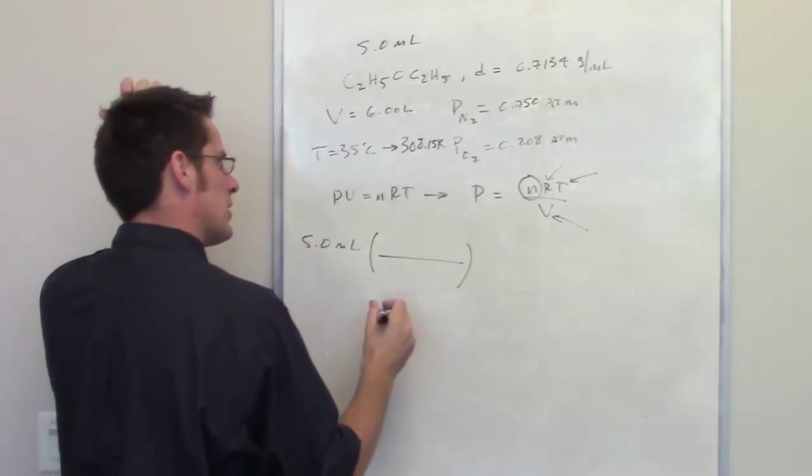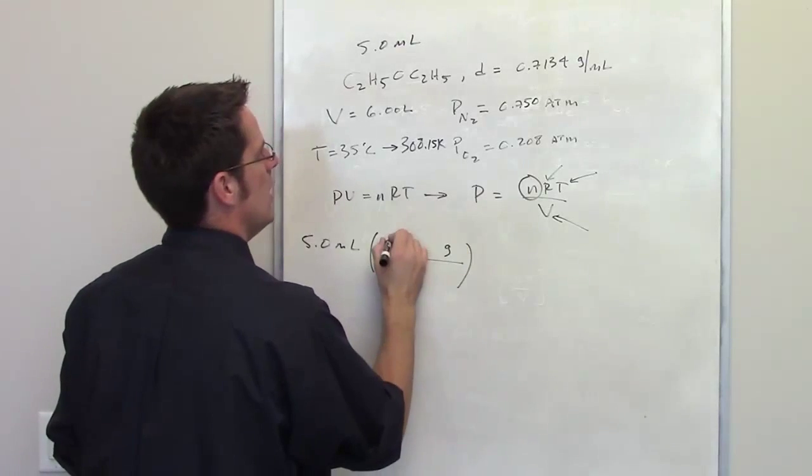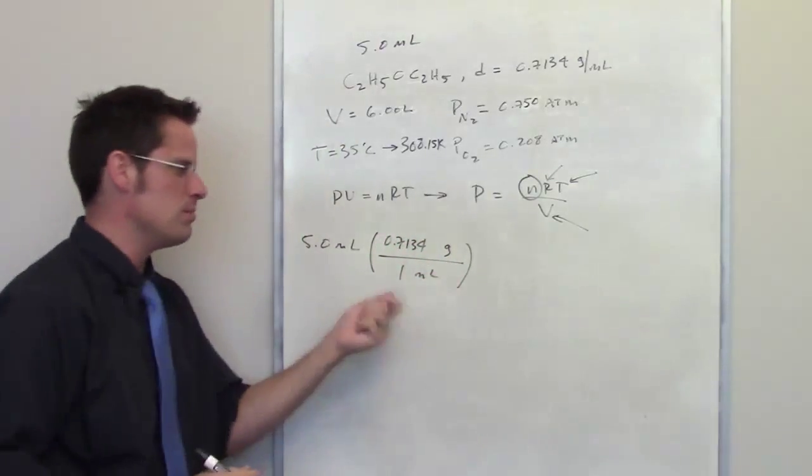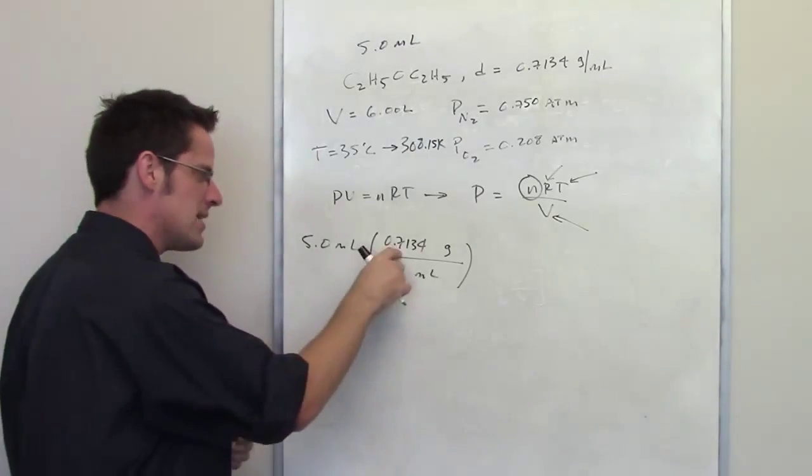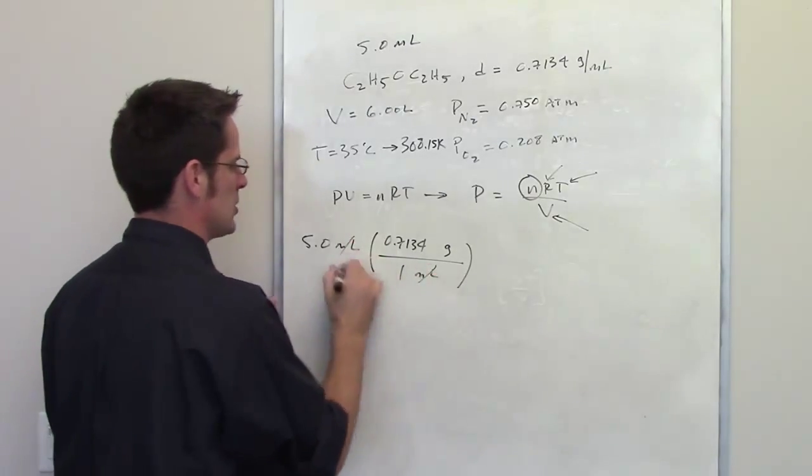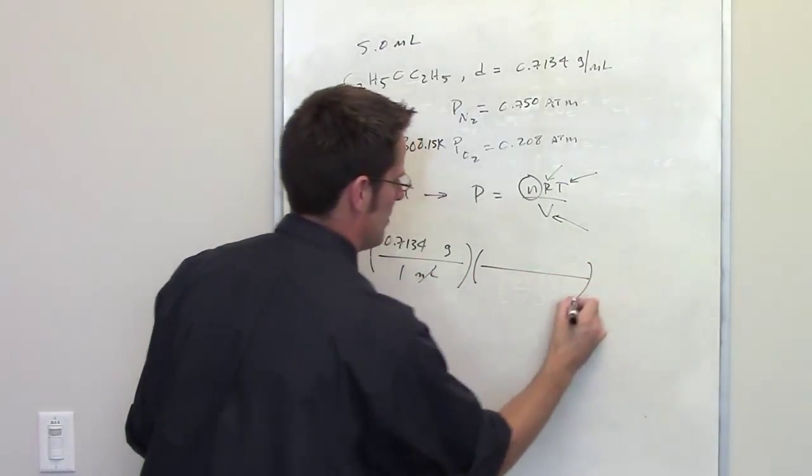We're also told that diethyl ether has a density of 0.7134 grams per milliliter which means that if I have 1 milliliter of this it weighs 0.7134 grams. I don't have 1 milliliter. I've got 5 milliliters but I'm getting a little bit closer to determining the total number of moles.